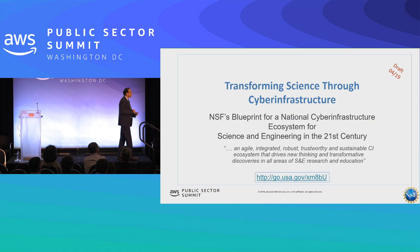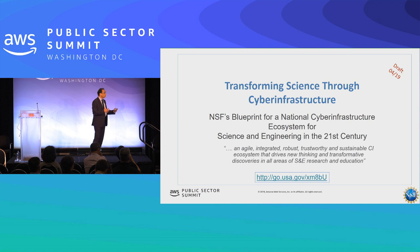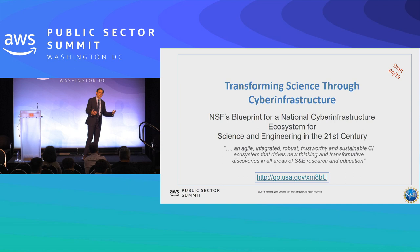Earlier this year we put together a blueprint — it's online in draft form, so you can provide comments. It lays out our vision and puts forth a blueprint for how we want to build out the computational dimension of this cyber infrastructure ecosystem. It's one of a family of blueprints we'll put together for data infrastructure, networking, and software. This is the first step, and we'd always appreciate your feedback.